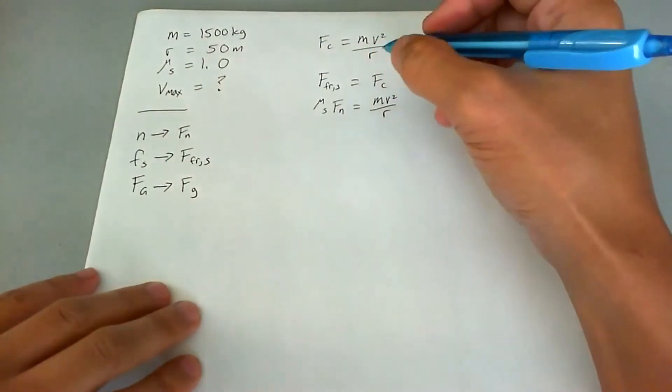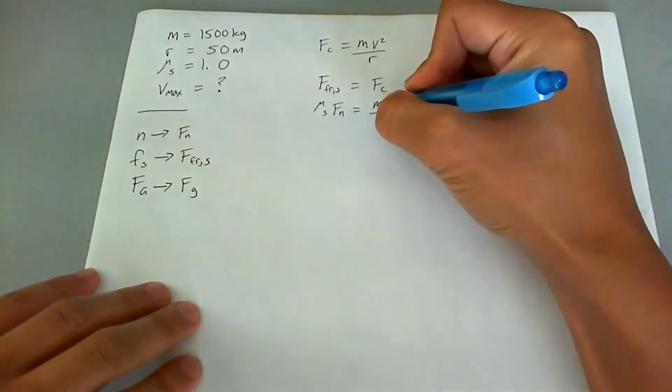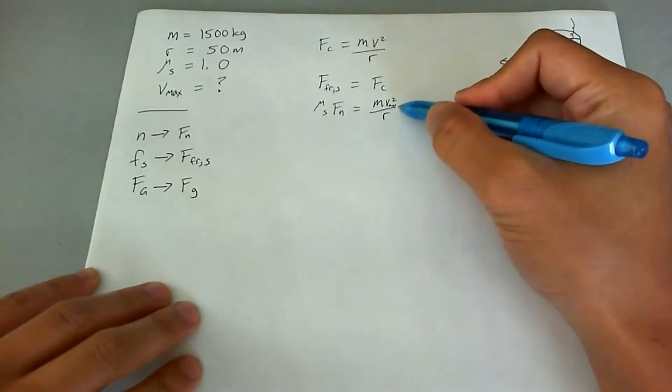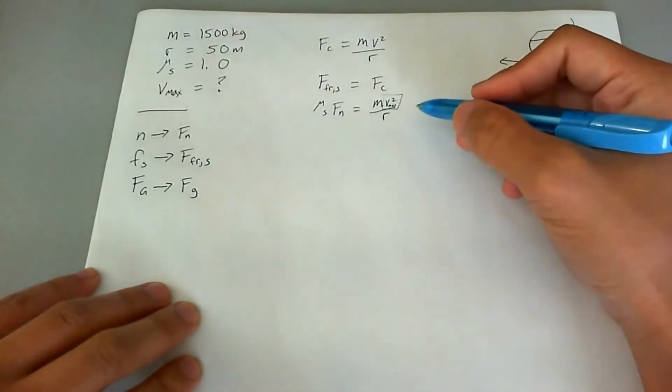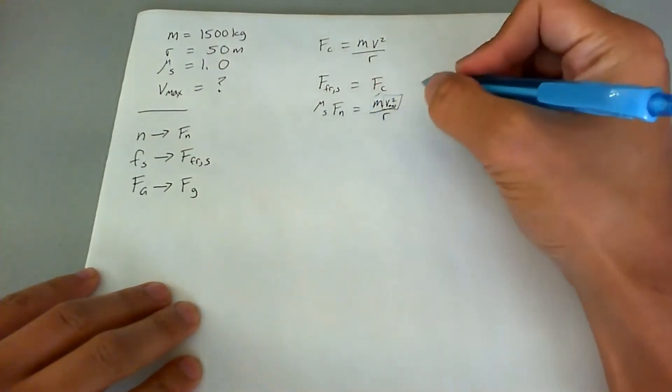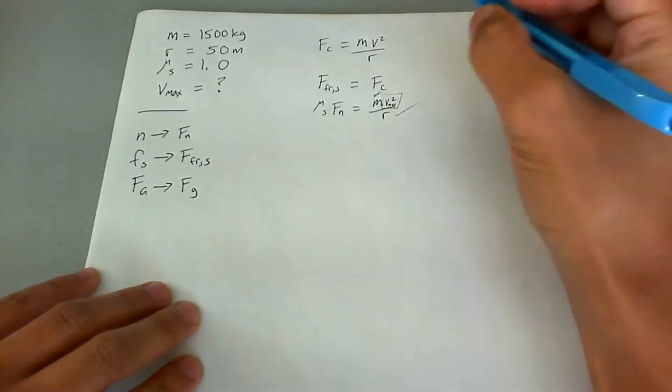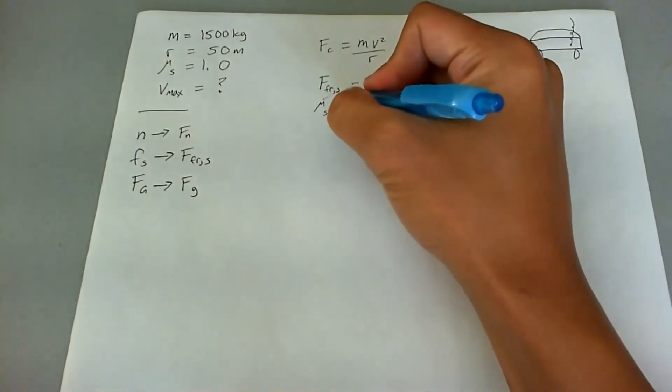Okay, so the first thing we want to do is we want to figure out, well, first of all, we know that this is going to be the maximum velocity right here. So we're going to go ahead and box this because that's what we want to know. We know what the mass is. We know what the radius is. We know what the mu s is, but we don't know what fn is. So we're going to do a little side quest.